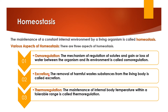Excretion is also an important aspect of homeostasis. When any organism maintains its internal environment, there is production of some waste products which must be removed from the body. The removal of harmful waste substances from the living body is called excretion. The third aspect is thermoregulation. Some organisms are warm-blooded and some are cold-blooded. Warm-blooded animals maintain their internal temperature, while cold-blooded organisms do not — their body temperature varies according to the environment. The process used to maintain body temperature is termed thermoregulation.